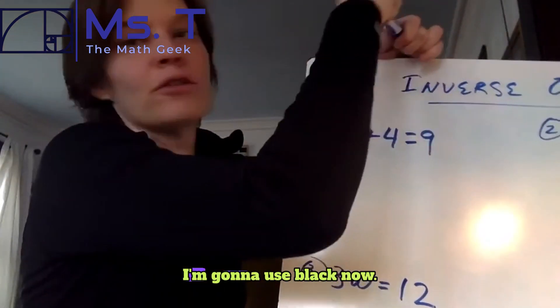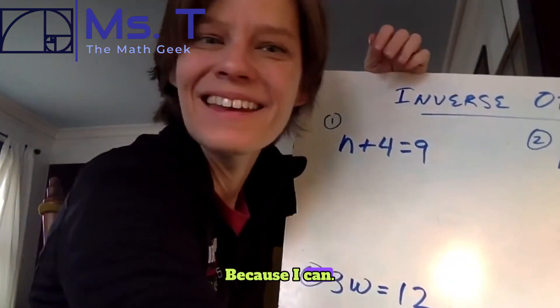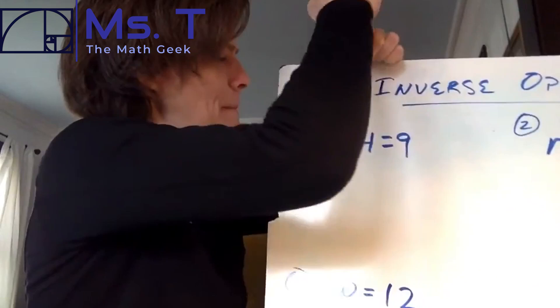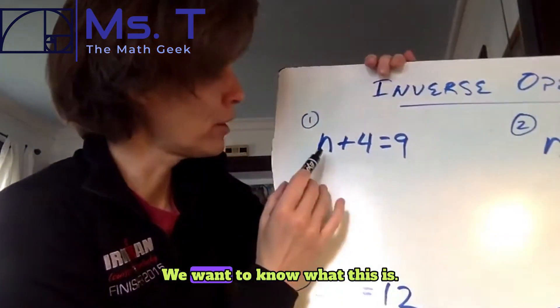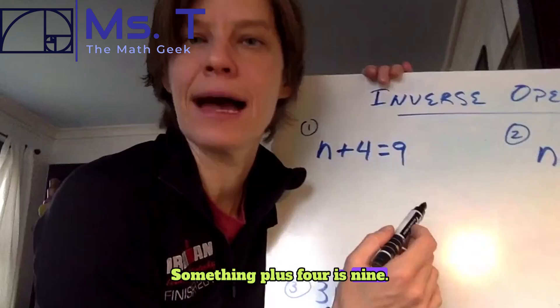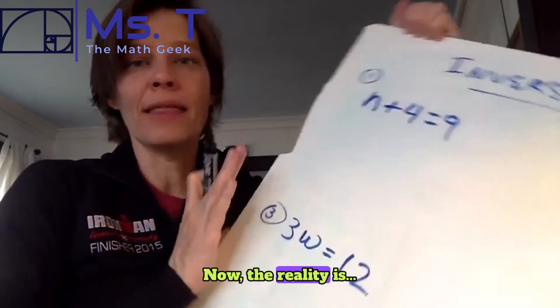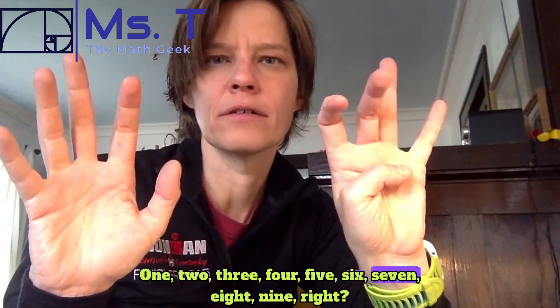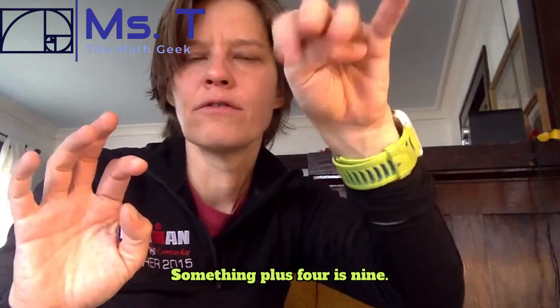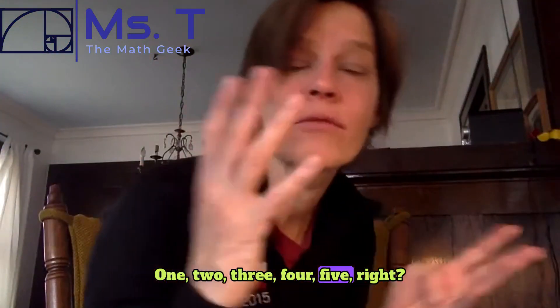So let's start here. I'm going to use black now because I can. So where's our variable? We want to know what this is. Something plus four is nine. Now the reality is I've got nine: one, two, three, four, five, six, seven, eight, nine, right? Something plus four is nine. What was the something? Five. One, two, three, four, five, right? We don't need algebra for that.